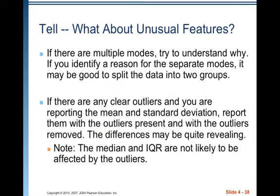What about unusual features? If there are multiple modes, try to understand why. If you identify a reason for the separate modes, it may be good to split the data into two groups. If there are clear outliers and you're reporting the mean and standard deviation, report them with the outliers present and with the outliers removed — the differences may be quite revealing. Note that the median and IQR are not likely to be affected by outliers, so they may be your better choice.